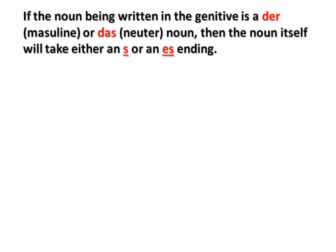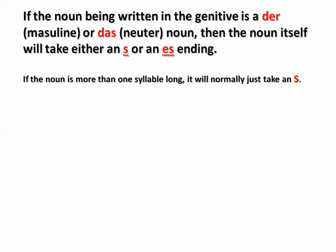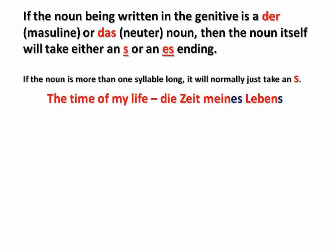If the noun being written in the genitive is a masculine or neuter noun — a 'der' or 'das' word — then the noun itself will also take an ending. This will be either an S or an ES. If the noun is more than one syllable long, it will just take an S. For example, 'the time of my life' — 'die Zeit meines Lebens.' 'Leben,' 'das Leben,' is two syllables, so it adds an S.